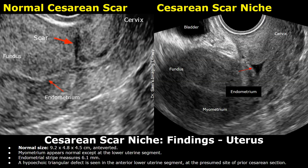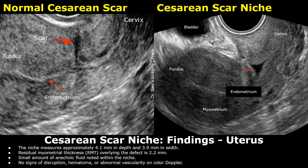Findings of the uterus: normal size, anteverted. Myometrium appears normal except at the lower uterine segment. Endometrial stripe measures 6.1 mm. A hypoechoic triangular defect is seen in the anterior lower uterine segment at the presumed site of prior cesarean section. The niche measures approximately 4.1 mm in depth and 3.9 mm in width. Residual myometrial thickness overlying the defect is 2.2 mm. Small amount of anechoic fluid noted within the niche. No signs of disruption, hematoma, or abnormal vascularity on color Doppler.